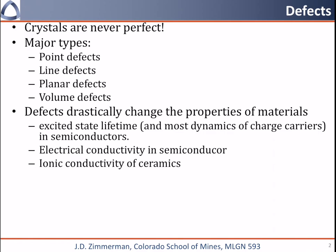Another example is ionic conductivity in ceramics. This shows up in things like fuel cells and the oxygen sensor in your car. A fun one is the color of gemstones. If you take aluminum oxide — often called corundum in its pure clean state, which is a clear crystal — if you add a little bit of chromium you can get a deep red color, which is ruby. And if you add a little bit of titanium and iron, you can get a deep blue color, which is sapphire.